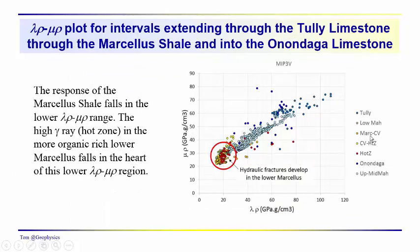Looking at the lithologies in lambda-rho/mu-rho space: the Tully and Onondaga are limestones with fairly high lambda-rho and mu-rho values. The Mahantango stretches across a large region of this lambda-rho/mu-rho space. The Cherry Valley sits just above the hot zone of interest. The high TOC region appears as red dots. The lower Mahantango falls together with this high TOC region in lambda-rho/mu-rho space.